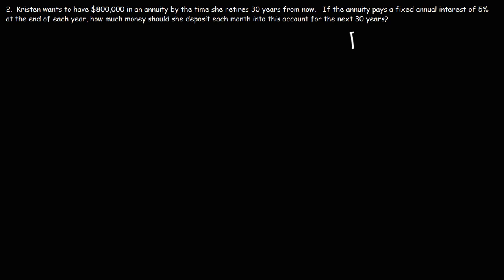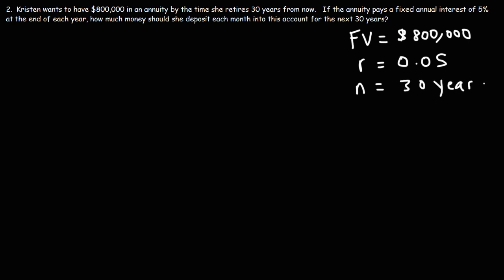In this problem we know the future value of the annuity — $800,000 — and we need to figure out how much money she needs to deposit. The interest rate is five percent or 0.05, paid on an annual basis, so N represents 30 years. We need to calculate C, the yearly deposit. Once we have C, we can divide by 12 to find the monthly deposit she needs to make before interest is paid at the end of each year.